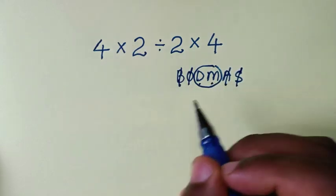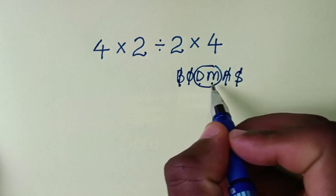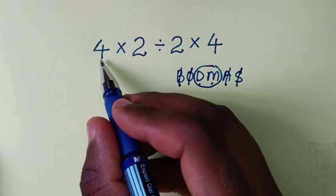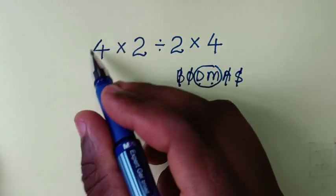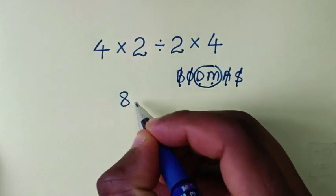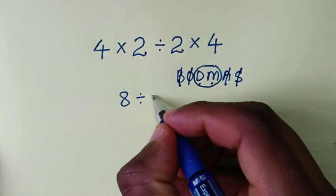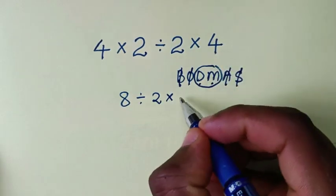With division and multiplication, we work from left to right. 4 times 2 is 8, so it becomes 8 divided by 2 times 4.